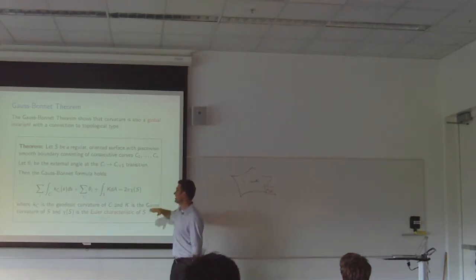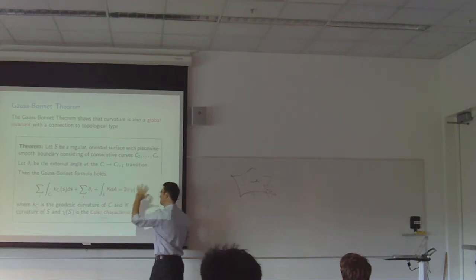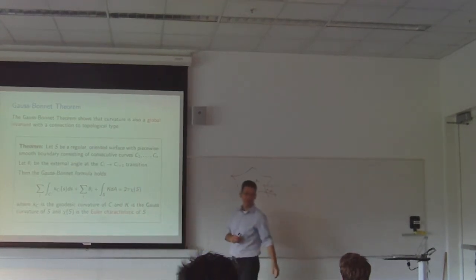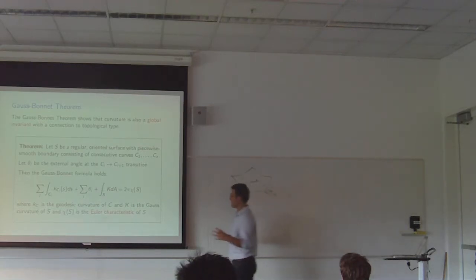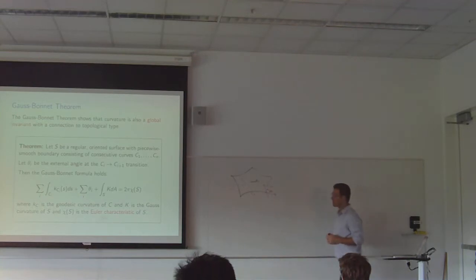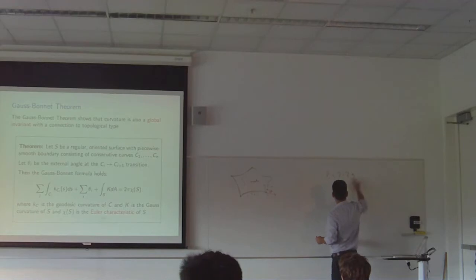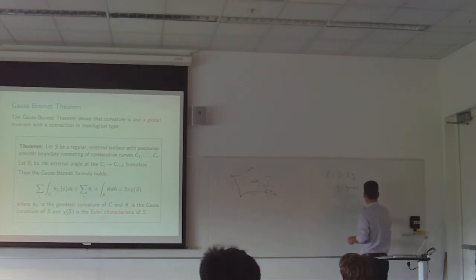The Gauss-Bonnet formula has four things in it. The most important piece is the integral of the Gauss curvature over the surface — you integrate k, the Gauss curvature, over the surface and you get a number. On the right-hand side is the topology part: 2π times the Euler characteristic of the surface. The Euler characteristic χ equals 2 minus 2g, where g equals the genus of the surface, which is the number of holes.